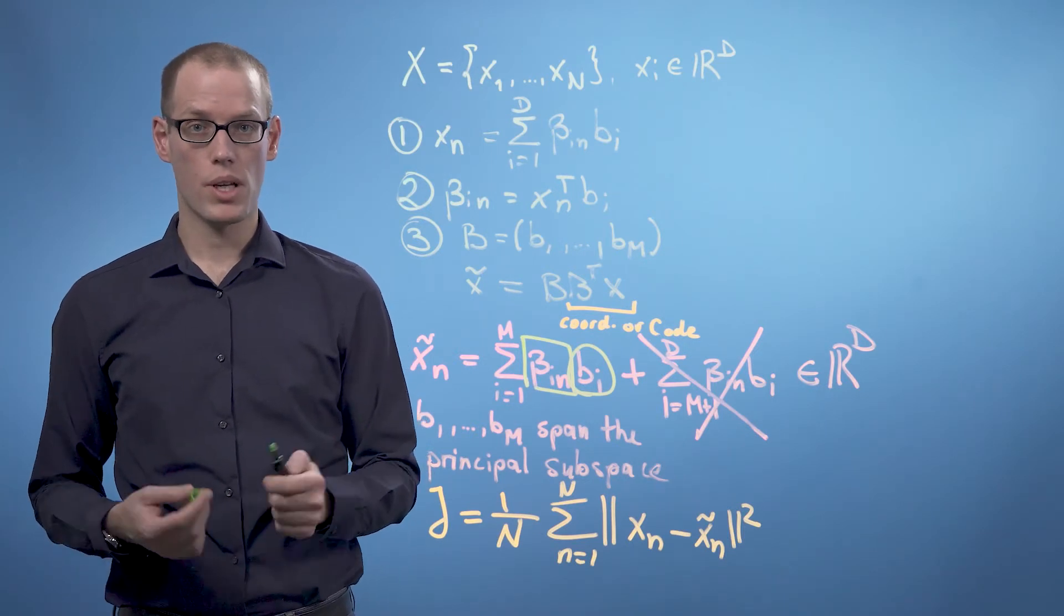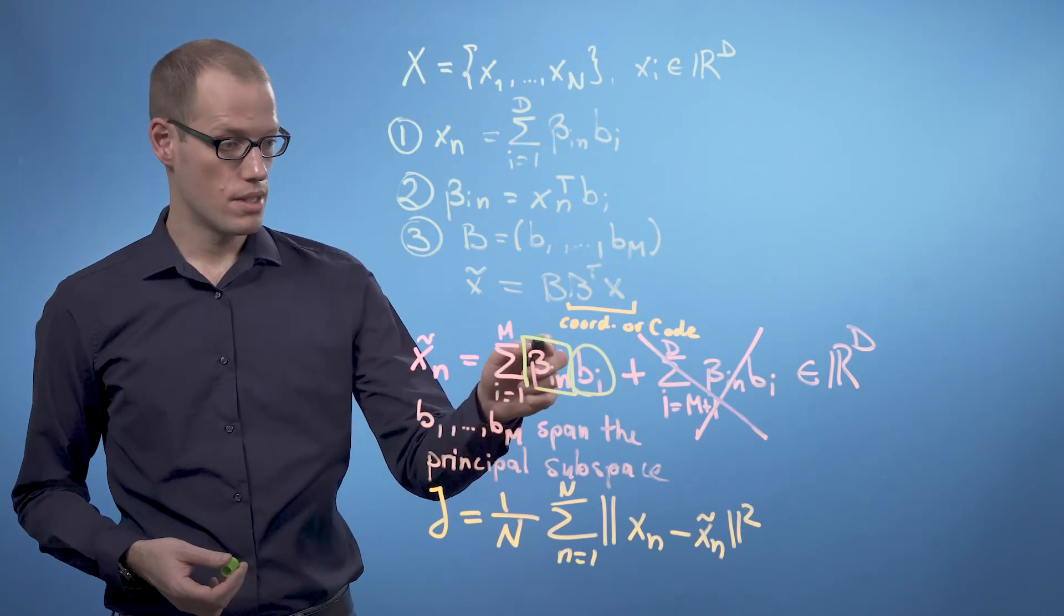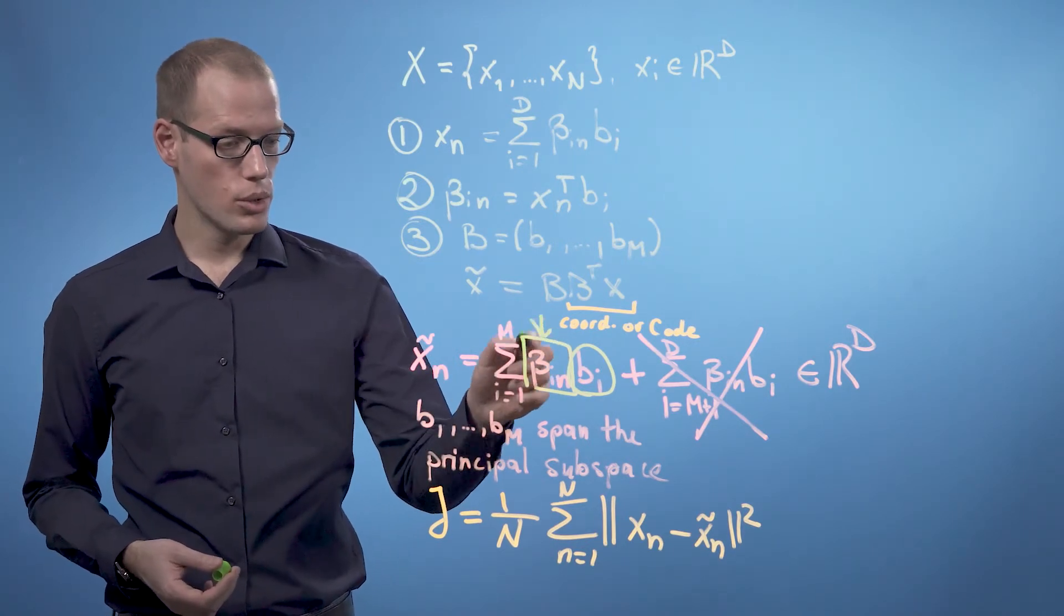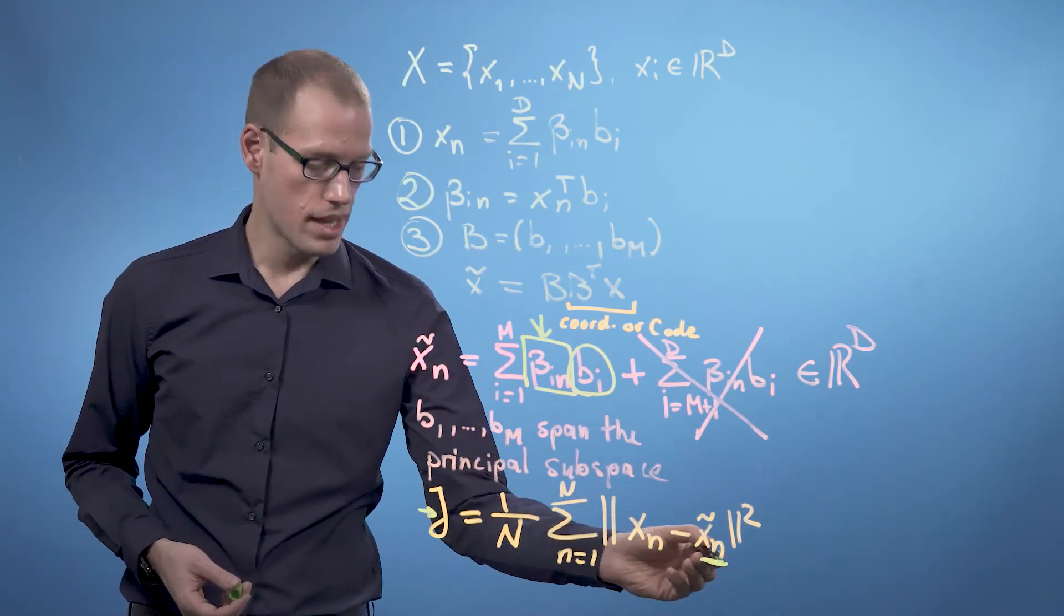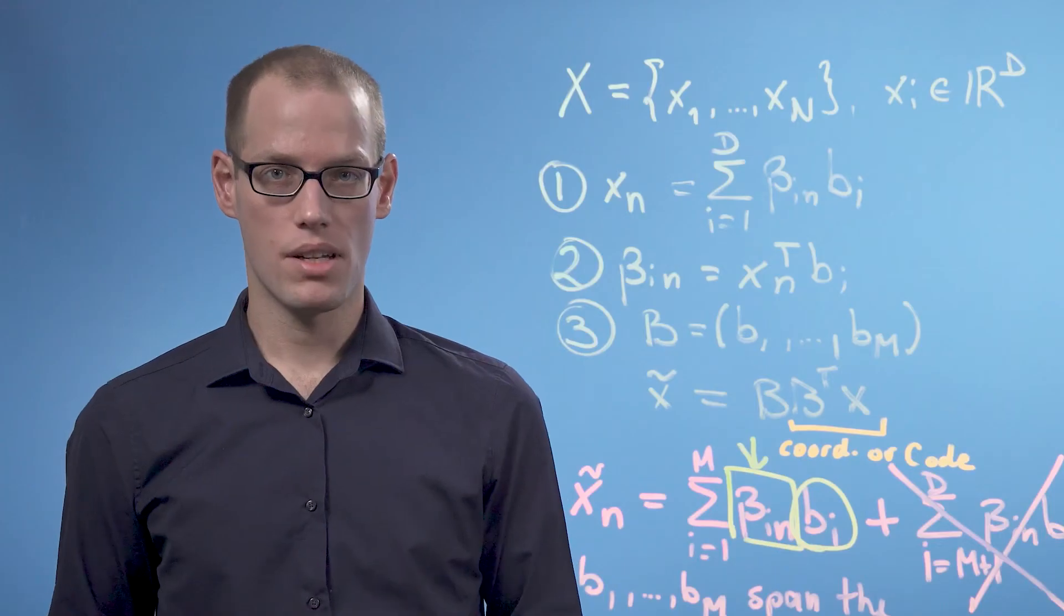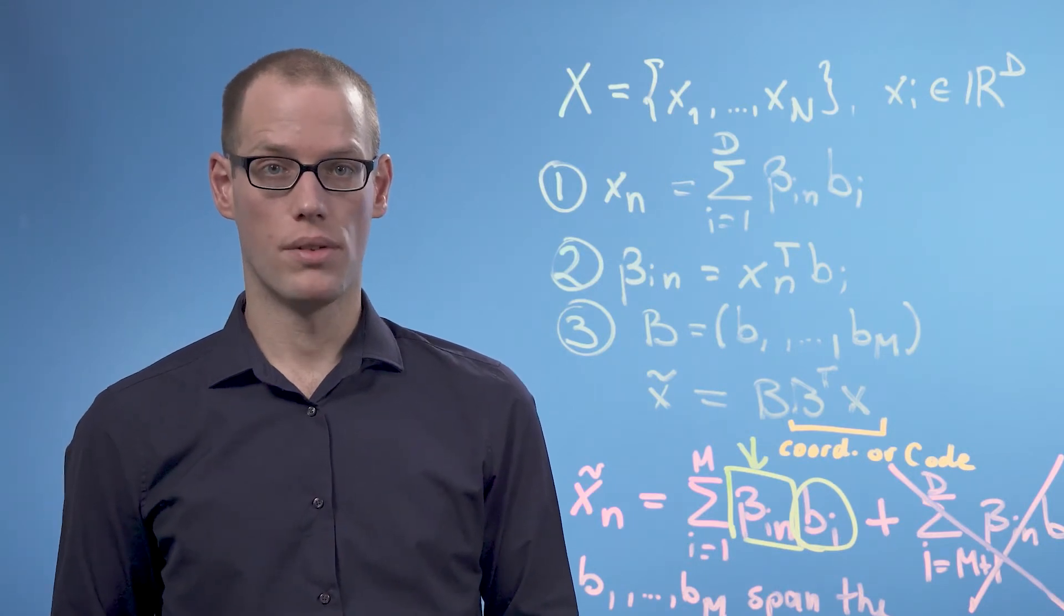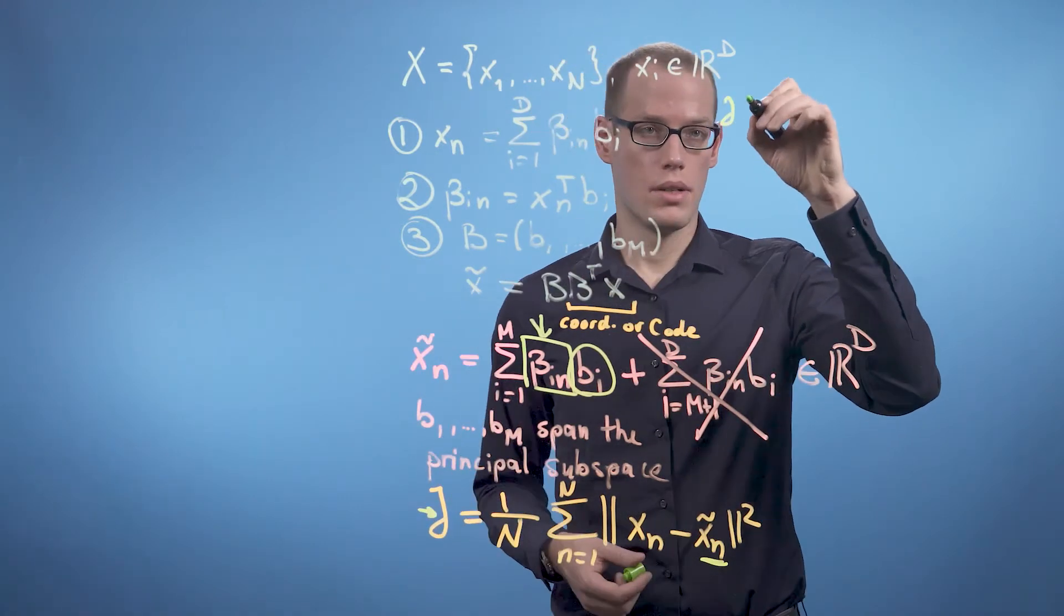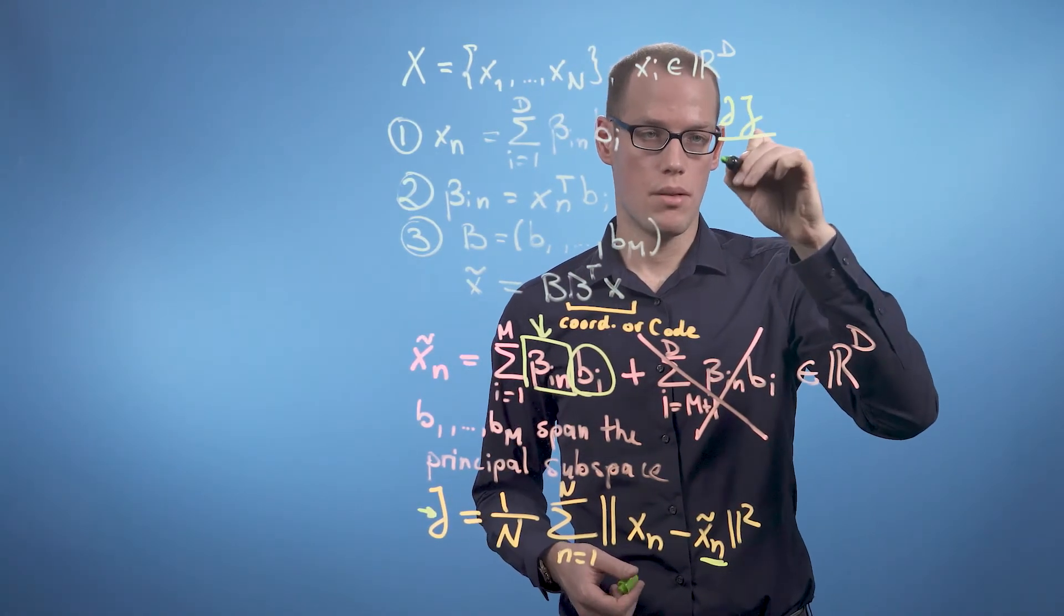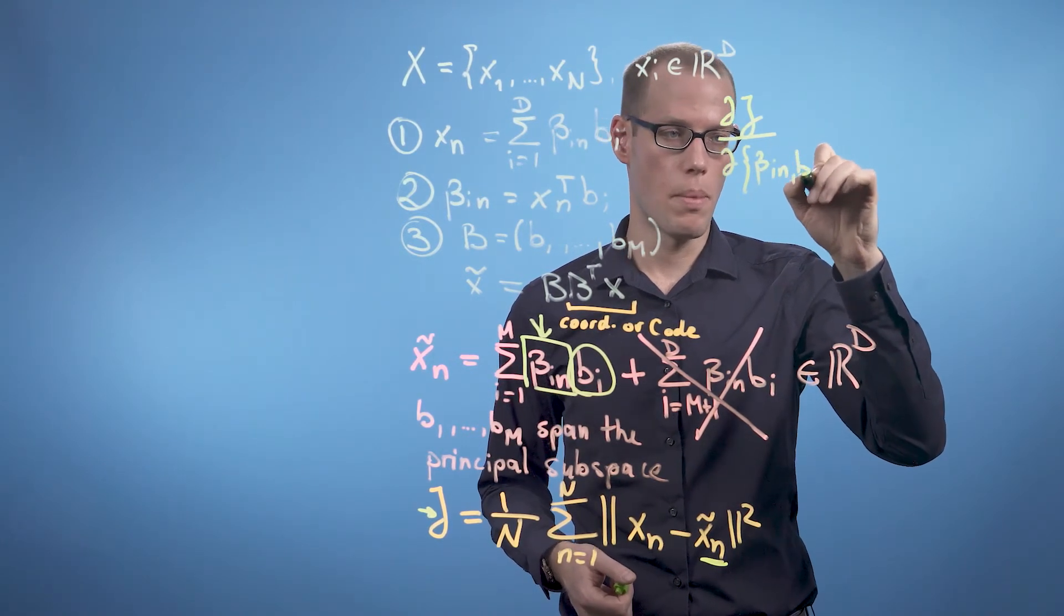But one observation we can already make is that the parameters only enter this loss function through X_n tilde. This means that in order to get our partial derivatives, we need to apply the chain rule. So we can write dJ by d either beta_in or b_i.